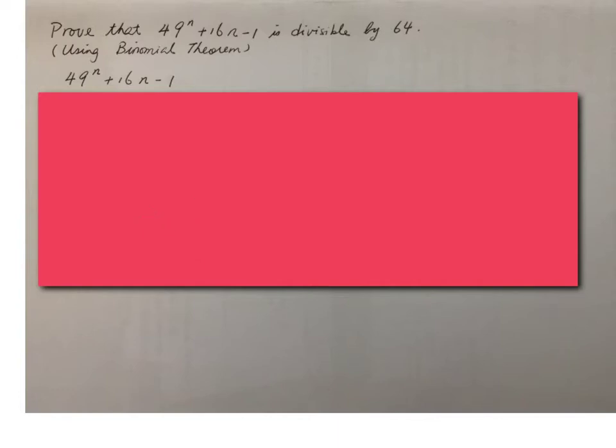Now, see what happens if I write 49 to the power n. If I want to express it in terms of 64, it means I will write 49 as 64 minus 15. Now, that will happen if we use binomial theorem to expand this one.